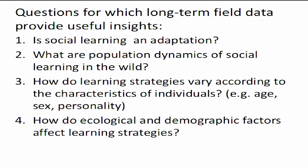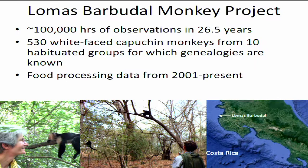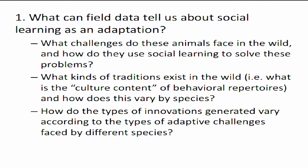Here are four questions for which long-term field data might be particularly useful: Is social learning an adaptation? What are the population dynamics of social learning in the wild? How do learning strategies vary according to individual characteristics like age, sex, and personality? And how do ecological and demographic factors affect learning strategies? Most of the detailed examples I'll give come from the Lomas Barbudal Monkey Project in Costa Rica, where we have over 100,000 hours of observation from 26.5 years on 530 individual white-faced capuchin monkeys from 10 habituated social groups for which we know genetic relationships. I'll particularly be discussing food processing data from 2001 to the present.